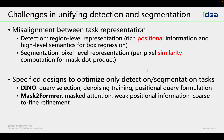The challenges in unifying detection and segmentation lie in two areas. The first is the misalignment between task representations: detection is a region-level task requiring rich positional information and high-level semantics for box regression, while segmentation is a pixel-level task requiring pixel-level similarity computation for mask prediction. Additionally, there are many specialized designs that optimize only one task. For example, DINO has query selection, denoising training, and positional query formulation, while Mask2Former has mask attention and cost refinement, and these designs are not directly compatible.